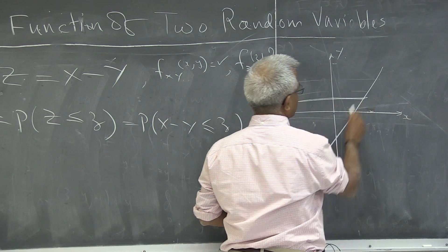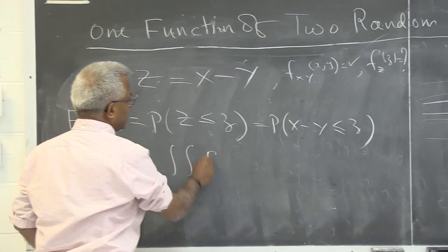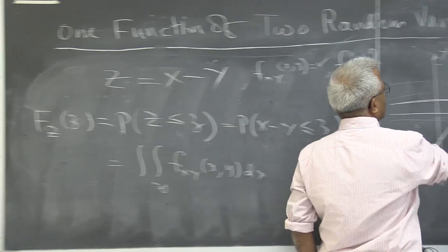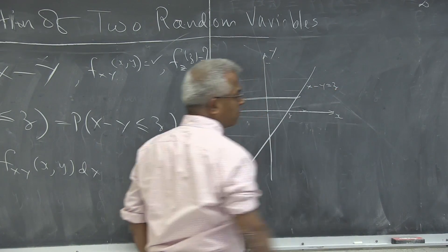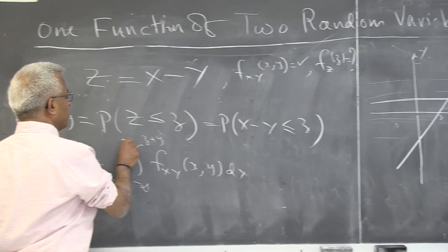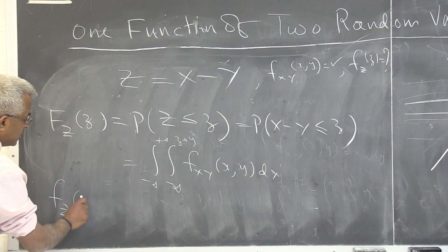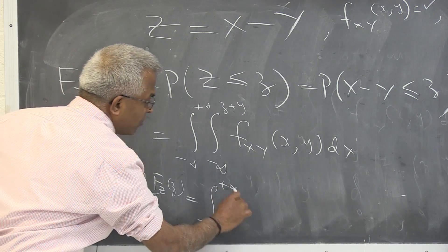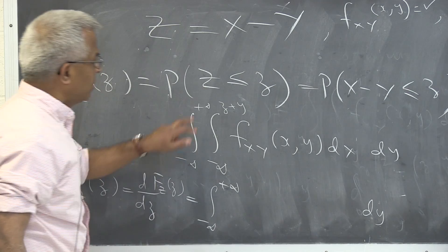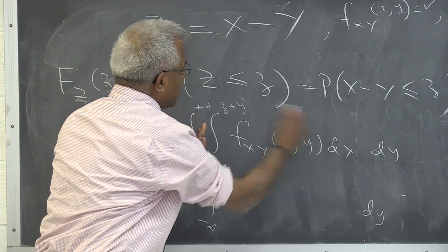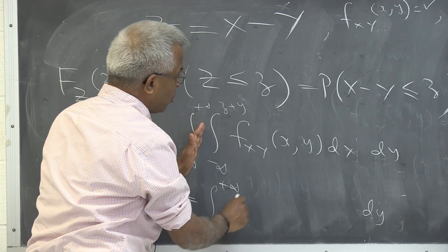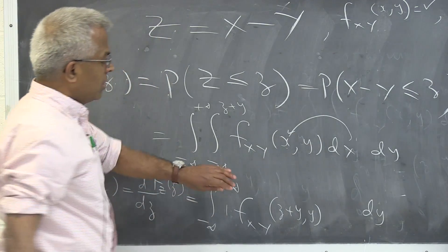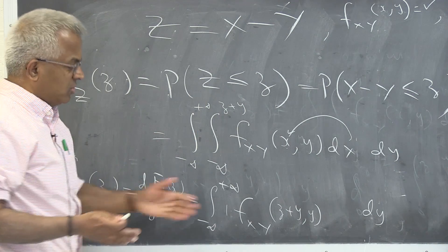I am going to take a horizontal strip. This turns out to be the double integral of f(x,y). I integrate on x first, from minus infinity to the line x minus y equal to z — so x goes up to z plus y. And in general, y goes from minus infinity to plus infinity. Taking the derivative of the distribution function gives the density function. The derivative of the top limit is 1, so I substitute the top limit in for x, and the derivative of the bottom limit is 0, giving no contribution.